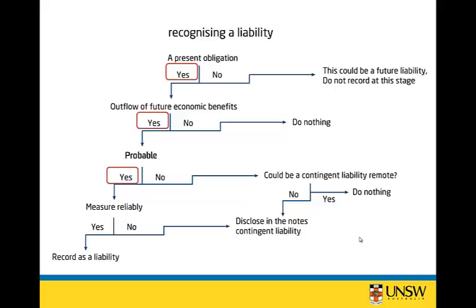Next, can we measure reliably? Yes, because we can put a percentage on it — in this case, the company says 10% of cost of goods sold. That's a way of estimating with reliability what they think the warranty obligation will be. If it were incredibly difficult to estimate and they couldn't put any percentage on it, then we would have to answer no. So yes, we're going to record a liability for the warranty, and it's going to be a provision.